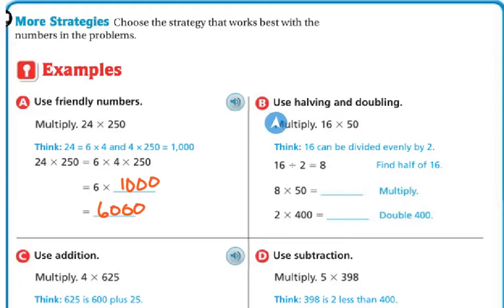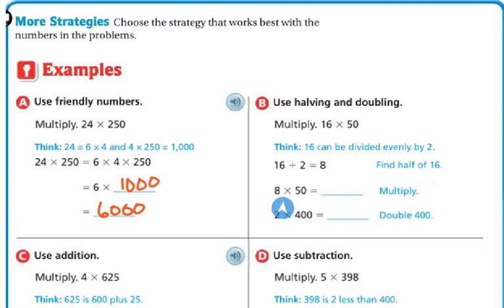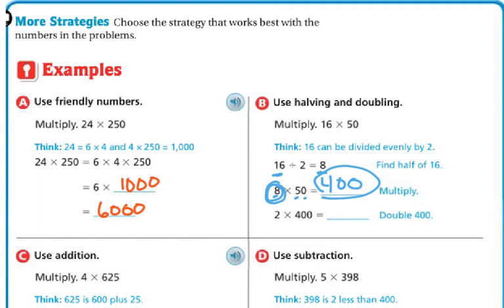Another mental math strategy is halving and doubling. For example, multiplying 16 times 50 — 16 can be divided evenly by 2, so half of 16 is 8. Now do 8 times 50: 8 times 5 is 40, add the zero to get 400. Since 8 is half of 16, I double the answer: double 400 is 800. So the answer to 16 times 50 is 800.